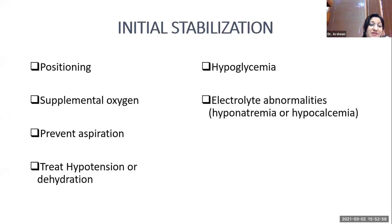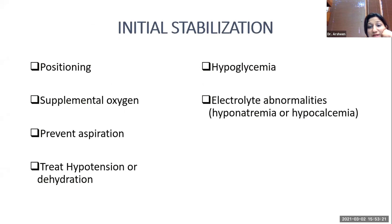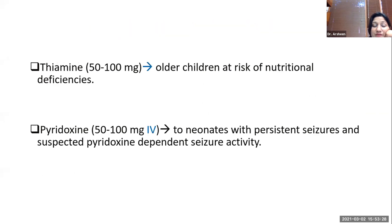Positioning is very important to prevent the risk of aspiration. Supplemental oxygen should be provided, and ventilator support or other respiratory measures should be initiated as early as possible. Hypotension should be treated with isotonic fluids, hypoglycemia corrected promptly, and electrolyte abnormalities especially hyponatremia and hypocalcemia corrected promptly. Thiamine should be considered if nutritional deficiency is suspected, pyridoxine for neonates with persistent seizures and suspected pyridoxine-dependent seizure activity.